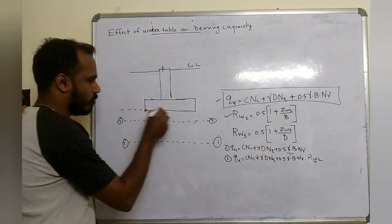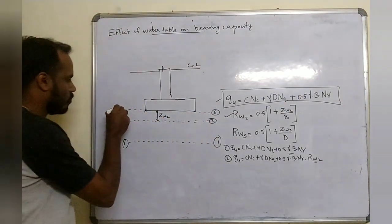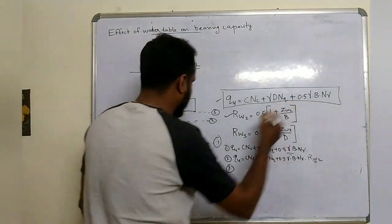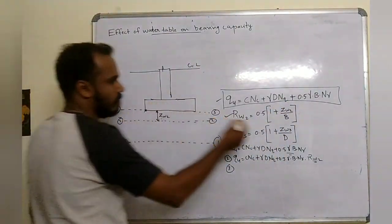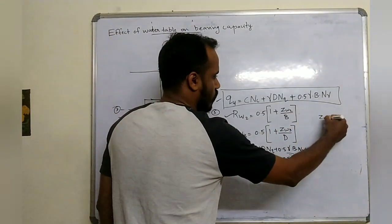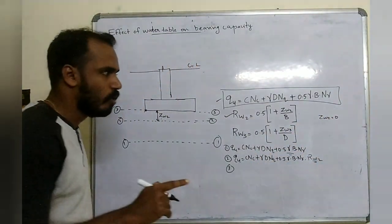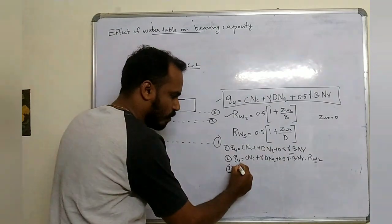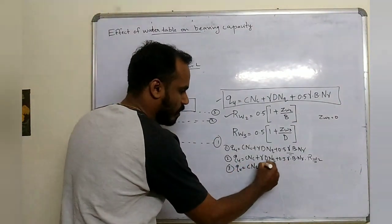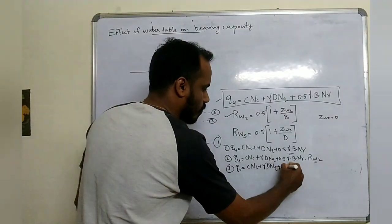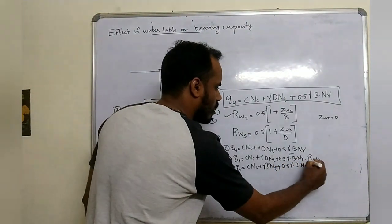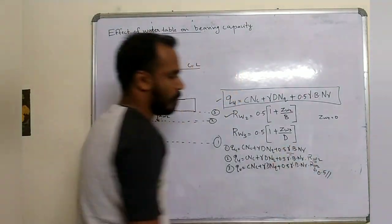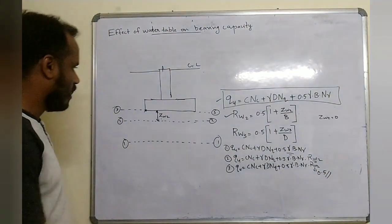The third condition is when the water table is at the base of the footing. In this case Zw2 is equal to zero. Substituting, Rw2 is equal to 0.5. So the equation becomes: Q is equal to c·Nc plus gamma·D·Nq plus 0.5·gamma·B·N-gamma multiplied by Rw2 (0.5).